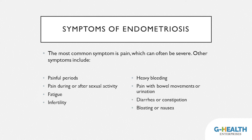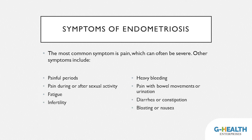Common symptoms of endometriosis — the most common is pain, which can range from slight to severe. Other symptoms include painful periods, pain during or after sexual activity, fatigue, infertility, heavy bleeding, pain with bowel movements or urination, diarrhea or constipation, and bloating and nausea. You can see how many of these symptoms can also be symptoms of other things. So if your member is complaining of these things, you definitely want to encourage them to see their primary care physician and also their OBGYN.